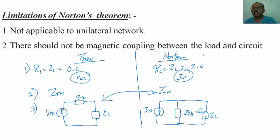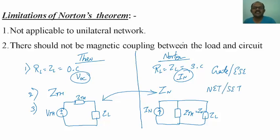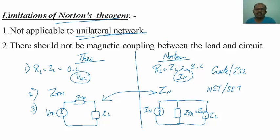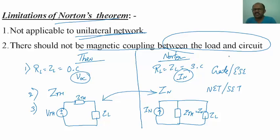Use whichever method is comfortable — both are very important. For GATE and ESE exams, Cases 2 and 3 are very important; for NET and SET exams, Case 1 is important. The limitations of Norton's theorem are: it is not applicable for unilateral networks such as diodes, and there should be no magnetic coupling between the load and the circuit. Please like the video, share it with your friends, and subscribe to the channel. All the best for your exams!